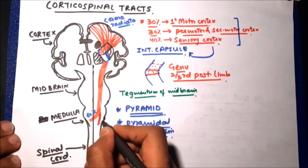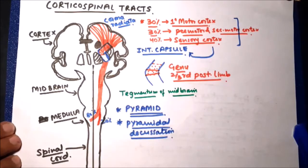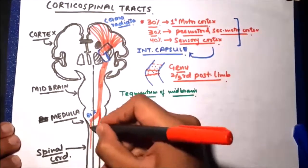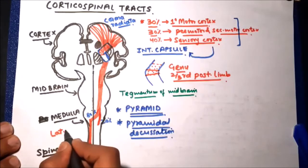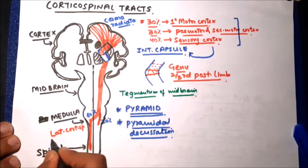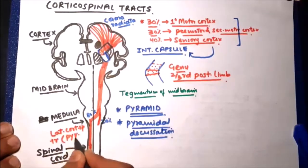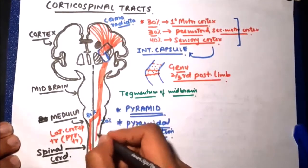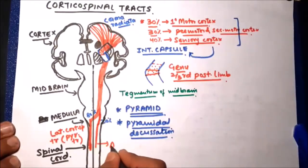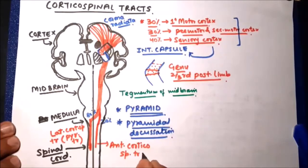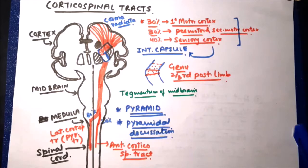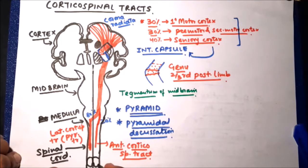At the pyramidal decussation, 80% of fibers cross to the opposite side while 20% remain uncrossed. The 80% of fibers that cross descend into the spinal cord as the lateral corticospinal tract, also called the pyramidal tract. The 20% of fibers that remain uncrossed descend as the anterior corticospinal tract.